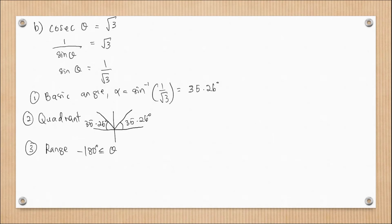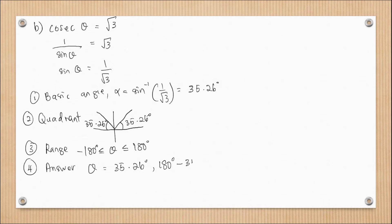Step three: the range of theta is from negative 180° to 180°. Similar to question 9a, we only have angles in quadrant one and two. Therefore, theta = 35.26° and the other angle is 180° minus 35.26° = 144.74°.